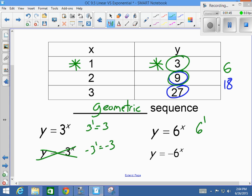Okay, 6 to the first power, well, that's 6. That one doesn't work. And negative 6 to the first power, well, that's negative 6. That doesn't work either. So this first one over here, y equals 3 to the x, has to be my answer for this equation.